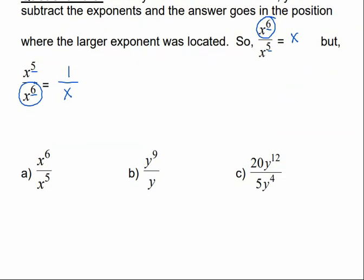Let's do that with some other problems. Problem a is the same as the one we just did, so we know that's just x. For b, we have y to the 9th divided by y. Remember, if we don't see an exponent, it's understood to be 1. We subtract: 9 minus 1 is 8, and since the bigger exponent's on top, our answer is y to the 8th.